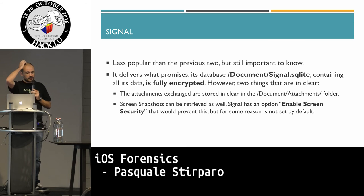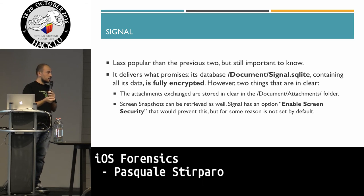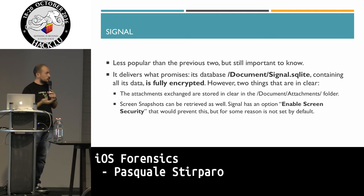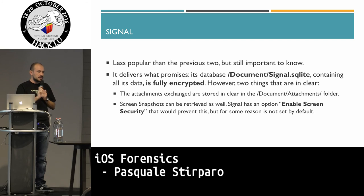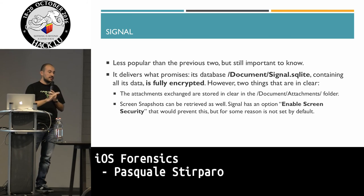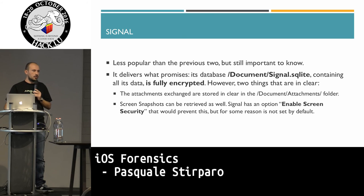Last but not least, Signal does what it promises — everything is encrypted. However, the screen is not cleared by default. You need to enable the option called 'enable screen security.' This is somewhat surprising for Signal given what they do. But you can enable it in your settings so that before releasing control of the application during screen transition, they clear the screen. What happens then is that you get the Signal logo when you retrieve the screenshot — so your content is protected.